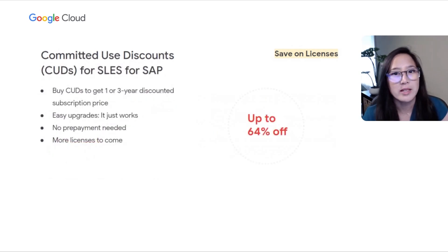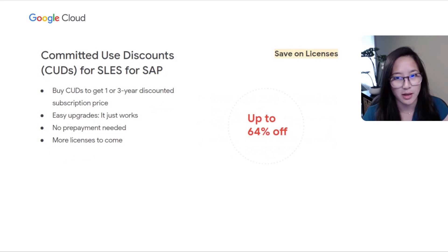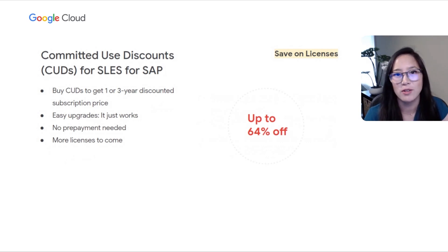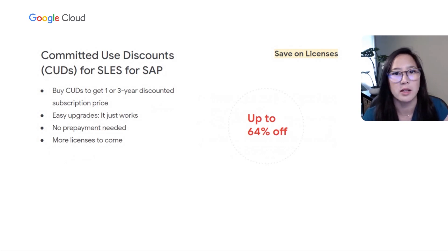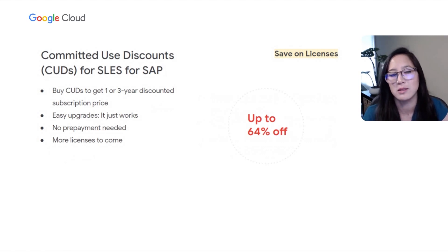What if you don't pre-own licenses and use OS licenses provided through Google Images but still want a discount? We offer committed use discounts for SUSE Linux Enterprise Server for SAP, and we plan to add more license types in the future. This allows you to get up to 64% off on-demand pricing by committing to use licenses for one or three years. It seamlessly supports version upgrades and requires no prepayment, so you don't have to tie up your investments.